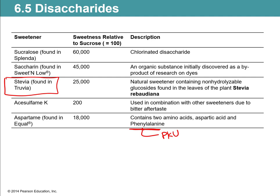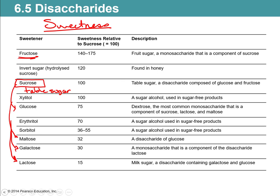One more thing: xylitol, erythritol, and sorbitol are called sugar alcohols. They are sugars that have had the alcohol groups altered so that they're not digestible. If they're not digestible, they don't get absorbed and they don't affect your blood sugar. So they put these in a lot of sugar-free products. If you've ever chewed sugar-free gum, it's going to have one of these three. They're also used in diabetic candy. Because they don't get digested, they don't affect blood sugar, which is helpful for people who have issues regulating blood sugar.